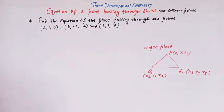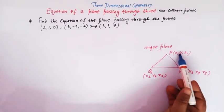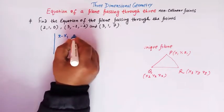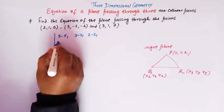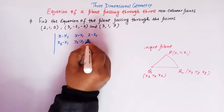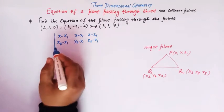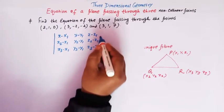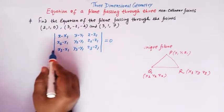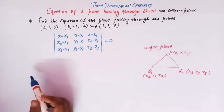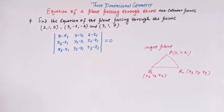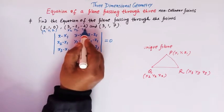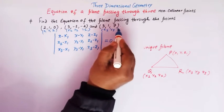The equation of a plane passing through three non-collinear points is given by the determinant: (x − x1), (y − y1), (z − z1) in the first row; (x2 − x1), (y2 − y1), (z2 − z1) in the second row; and (x3 − x1), (y3 − y1), (z3 − z1) in the third row, all equal to zero. Here (x1, y1, z1), (x2, y2, z2), and (x3, y3, z3) are the three non-collinear points.